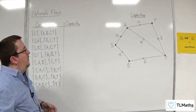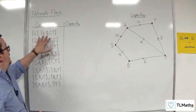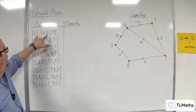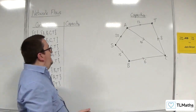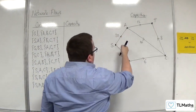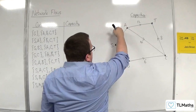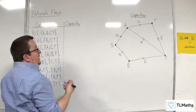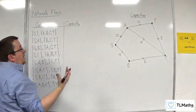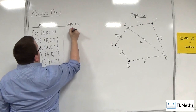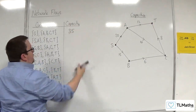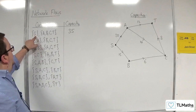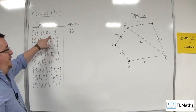We're going to work out the value of each of these cuts. So S with A, B, C, T — that's going to cut there, cutting through 20 and 15. So that would be 20 plus 15, which is 35. That's the flow going from the source set to the sink set.